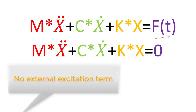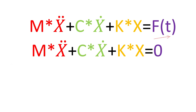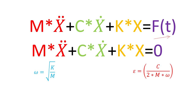Recalling the definitions of natural frequency and damping factor from our previous videos: omega_n is defined as the square root of k/m, and the damping factor ζ is defined as c/(2mω_n). We are now going to substitute these values to convert the equation into a form more suitable for analysis.